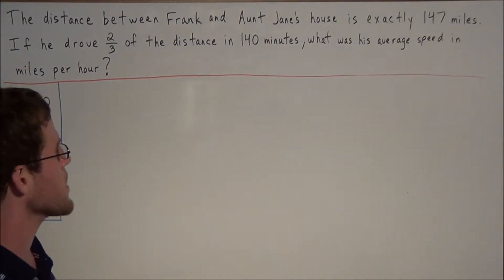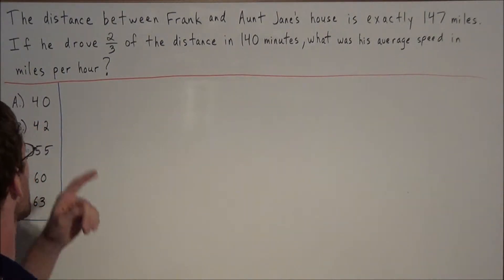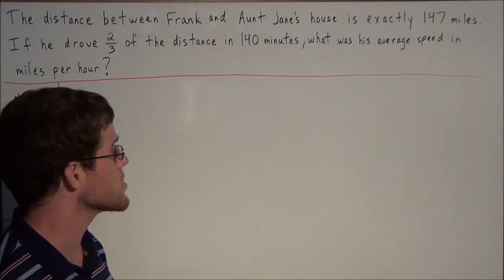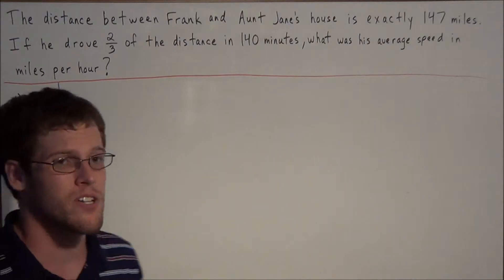The distance between Frank and Aunt Jane's house is exactly 147 miles. If he drove two-thirds of the distance in 140 minutes, what was his average speed in miles per hour?